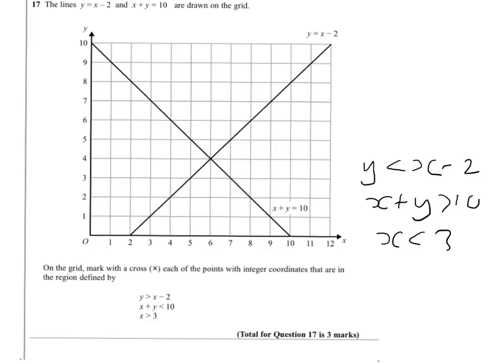So, for example, if we took the point 9, 4, then 9 take 2, 9 being the x-coordinate, is 7, and y is 4.